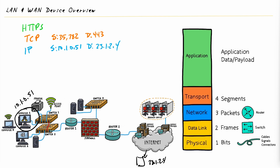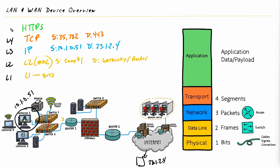Computer one also needs to include the layer two information before sending data into the network. The layer two Ethernet MAC addresses are used for the first leg of the journey. The source MAC address is computer one's own address, and the destination MAC address is not the server's address but rather the next device in the path — the default gateway router. Once all that information is ready, computer one at layer one sends the bits of data out on the network, using its network interface card.